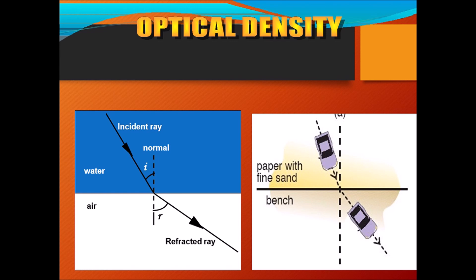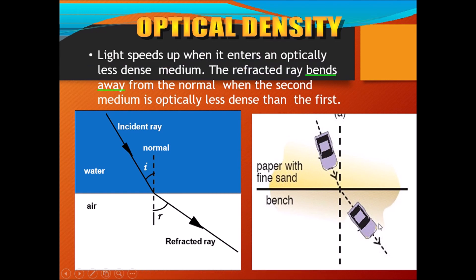Similarly, when the car goes from denser to rarer medium — say from sand to a smooth surface — the right tire touches the rarer medium first. Since it is a rarer medium, less force is applied on that side. More force is applied on the denser side, so the car bends slightly to the left — away from the normal. That is why we say when light goes from denser to rarer, it bends away from the normal.